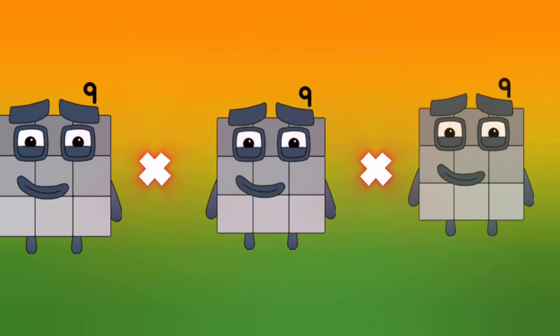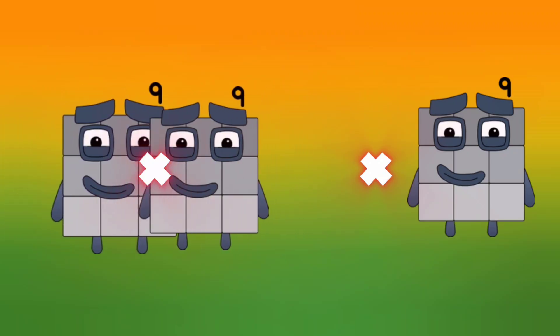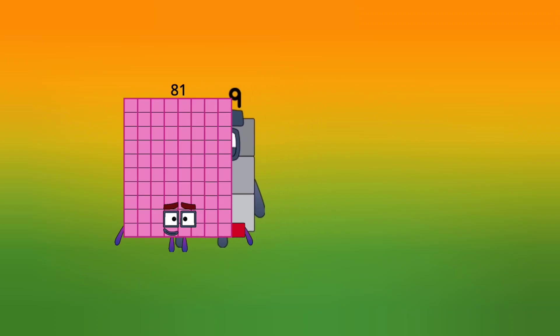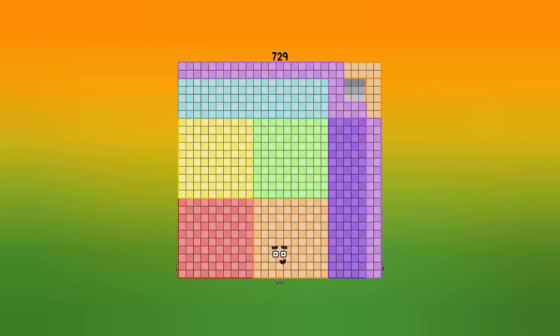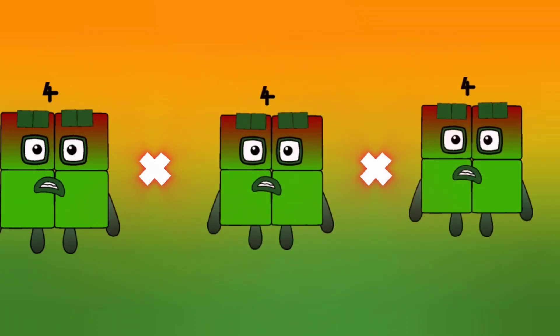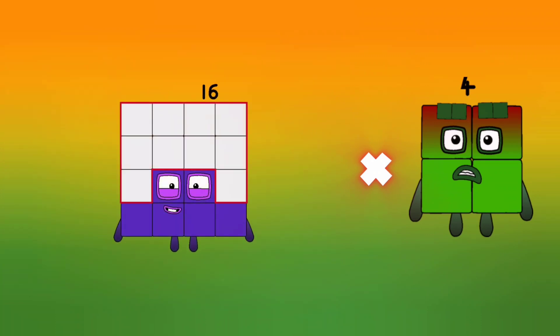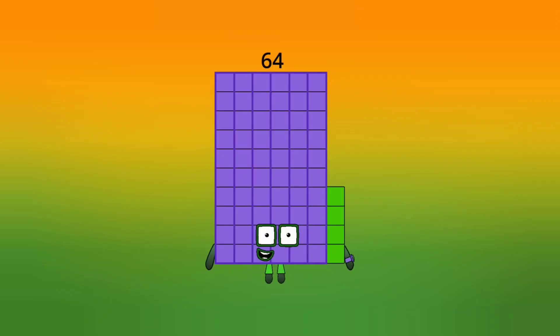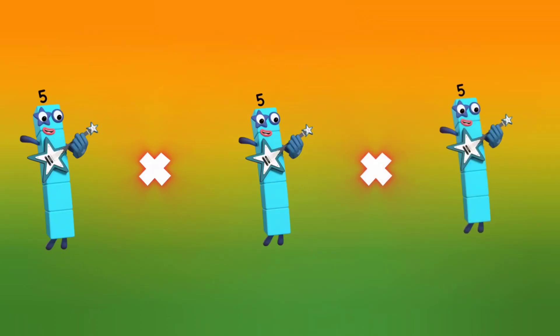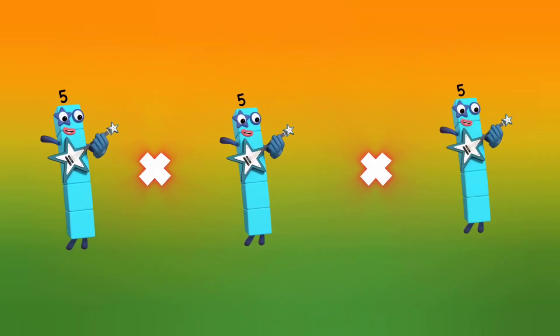9 into 9 into 9 — let's multiply: 9 into 9 is 81, let's multiply 9 is 729. 4 into 4 into 4 — let's multiply: 4 into 4 is 16, let's multiply 4 is 64.